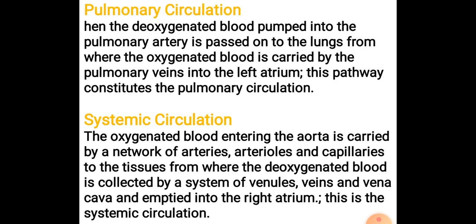Next is systemic circulation, which includes the distribution of blood from the aorta to the rest of the body. The oxygenated blood entering the aorta is carried by a network of arteries, arterioles, and capillaries to the tissues. From the tissues, deoxygenated blood is collected by the system of venules, veins, and venacava, and emptied into the right atrium.